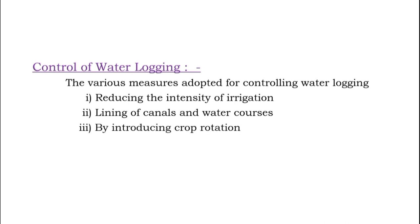By introducing crop rotation: Some crops require more water and others require less water. If the field is always sown with a crop requiring more water, in order to avoid this, a high water requiring crop should be followed by one requiring less water.